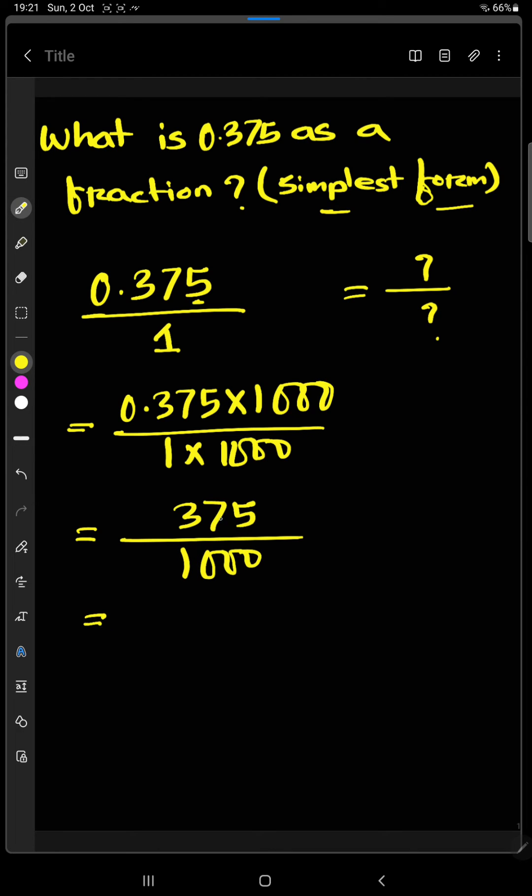Now we divide by 25, we'll get here 15 and here 40. If we again divide this with 5, we'll get 3 and here we get 8.